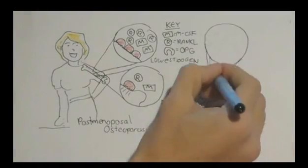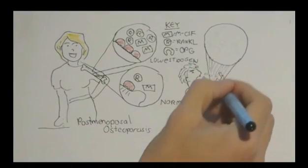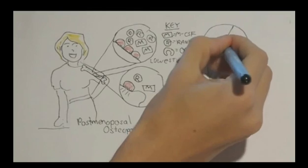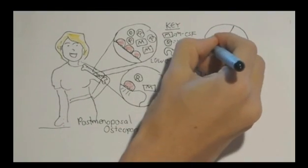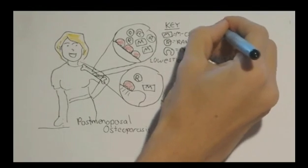Prolonged use of glucocorticoids increases RANK ligand expression, which in turn inhibits OPG production. Now this man here in this drawing, if you can see the man, he's taking glucocorticoids.